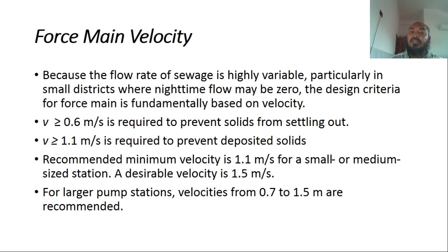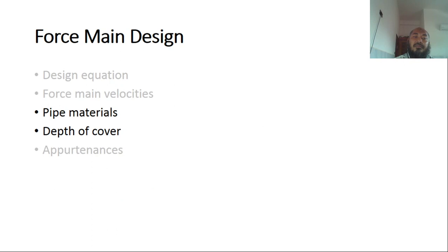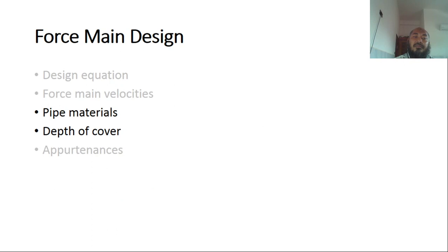The desirable velocity is 1.5 m/s. For large pump stations, velocities from 0.7 to 1.5 m/s are recommended. When selecting pipe material, choose materials that do not have the potential for crown corrosion — the corrosion caused by sulfuric acid.